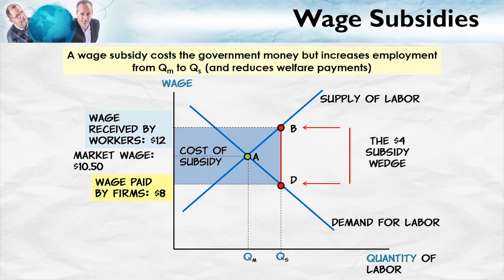It's also worthwhile to compare a wage subsidy with a minimum wage. We haven't actually talked about the minimum wage yet — we'll do so in a future chapter, so consider this bonus material. Let's imagine that we have a minimum wage at the same level as would be created by the wage subsidy — in this case, a minimum wage of, let's say, $12.